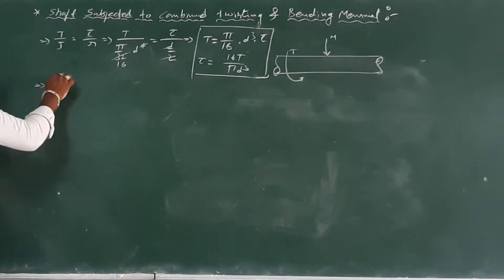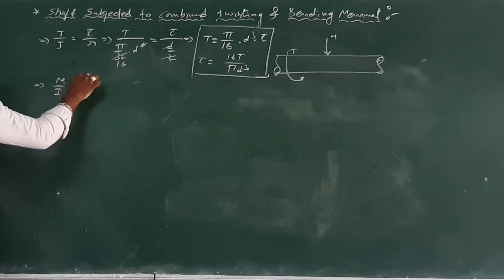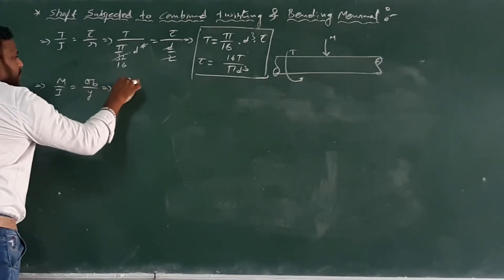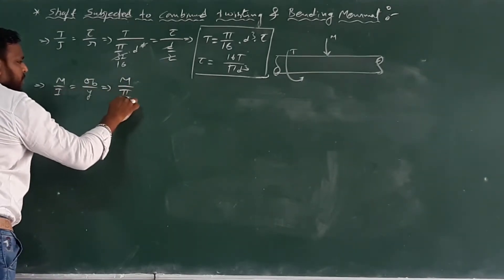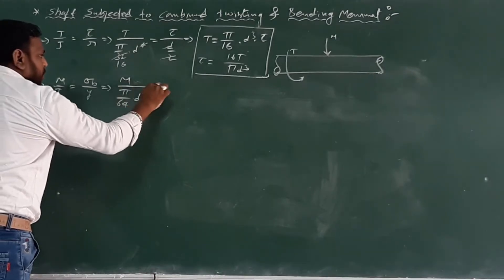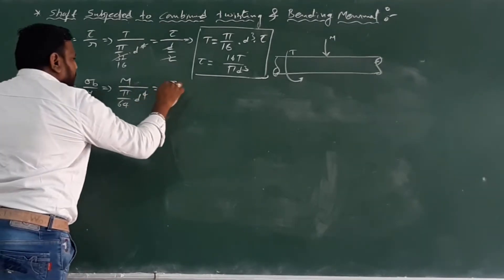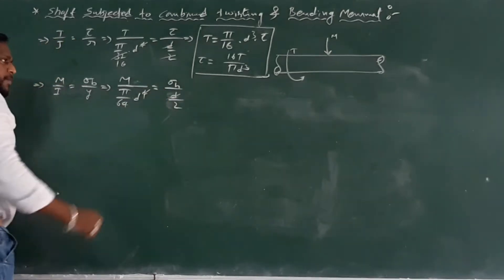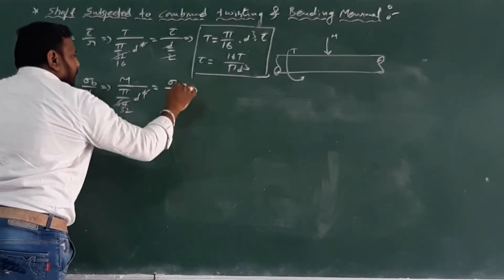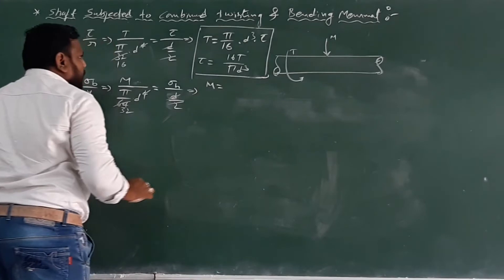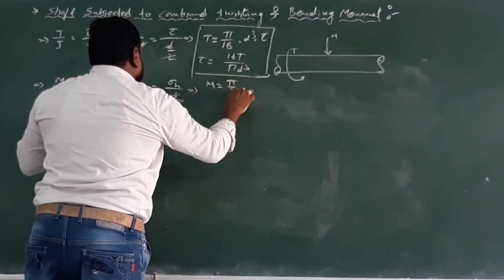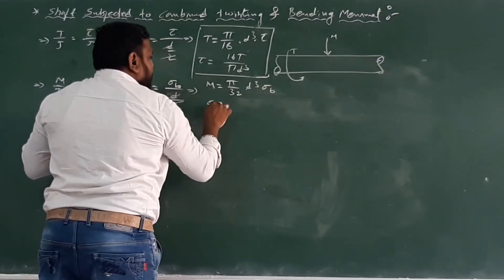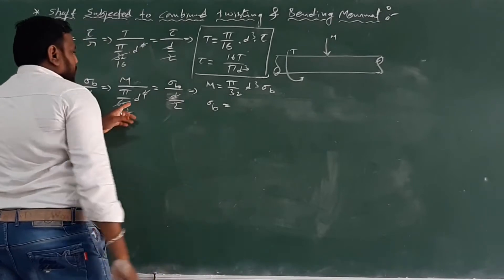For bending, the relation M by I equals sigma_b by Y. The I value is pi D to the fourth over 64, and Y equals D by 2. This gives sigma_b equals 32M divided by pi D cubed. So sigma_b equals 32M by pi D cubed.